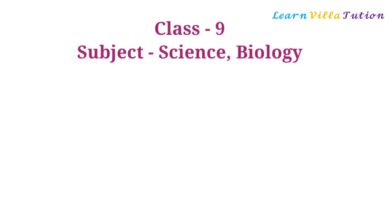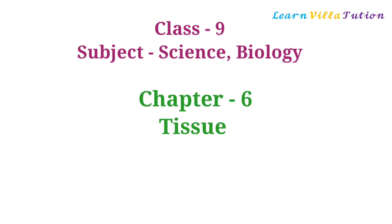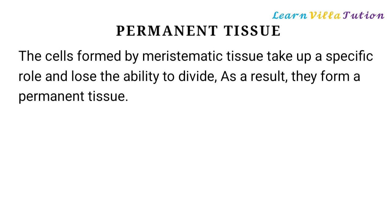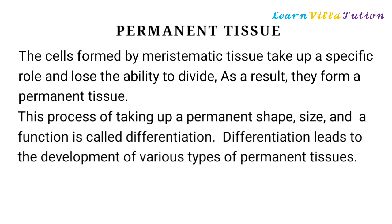Class 9, Subject: Science, Biology, Chapter 6: Tissues. The cells formed by meristematic tissue take up a specific role and lose the ability to divide. As a result, they form a permanent tissue. This process of taking up a permanent shape, size, and function is called differentiation. Differentiation leads to the development of various types of permanent tissues.